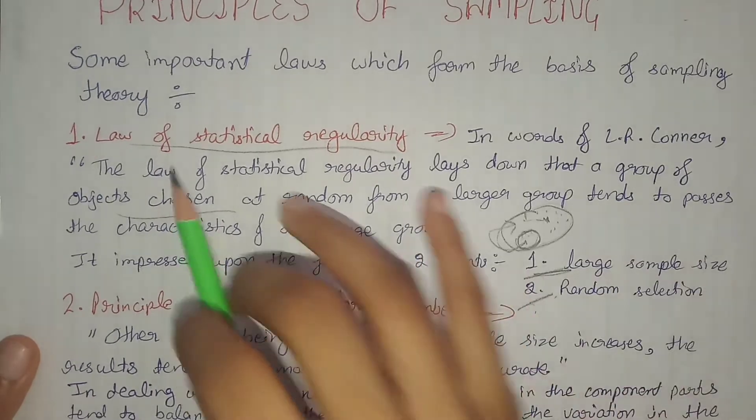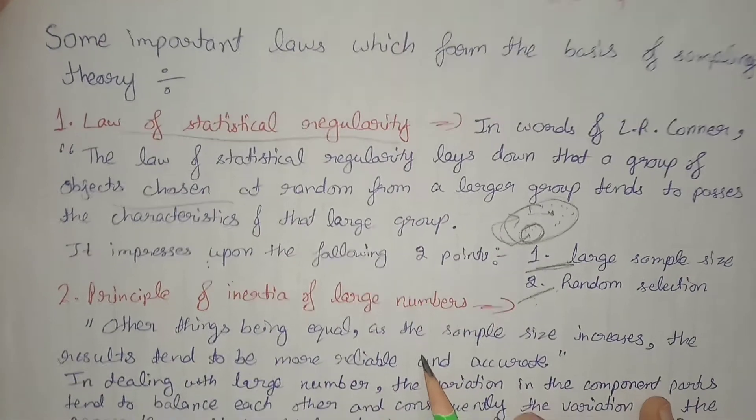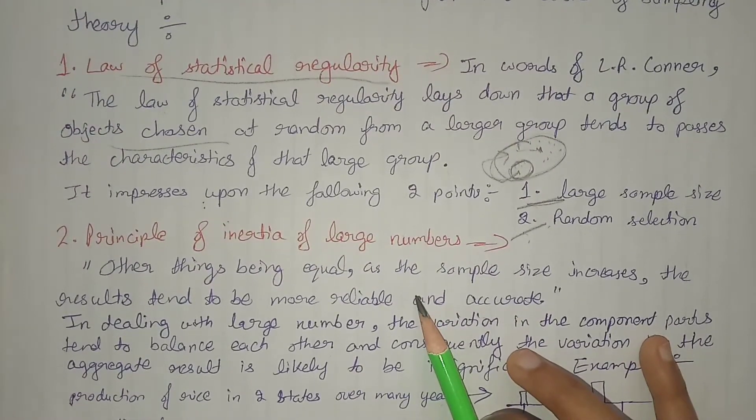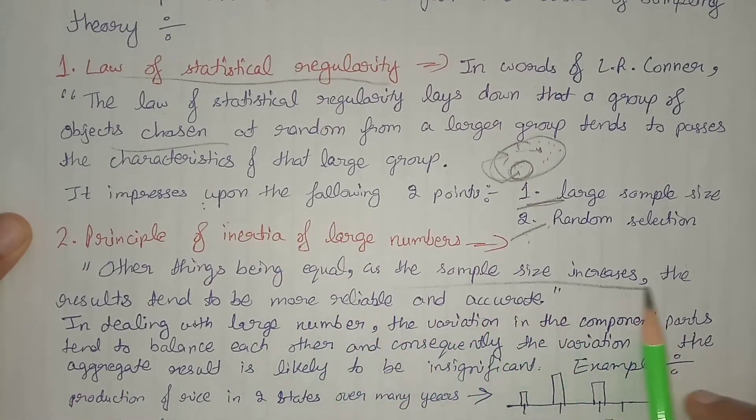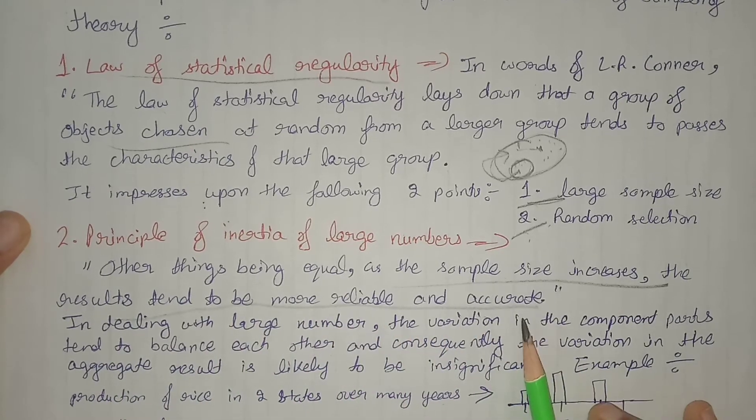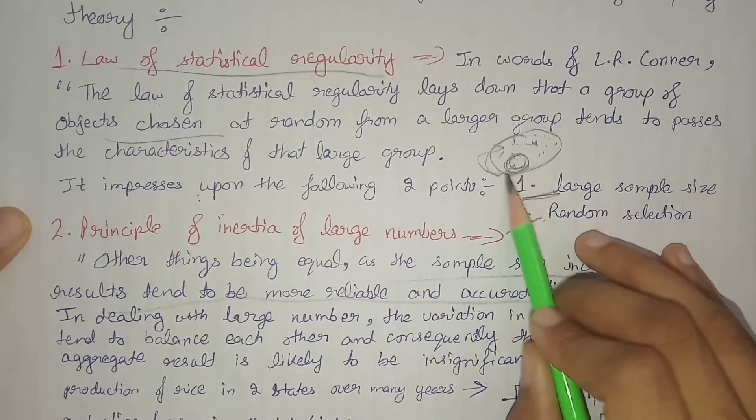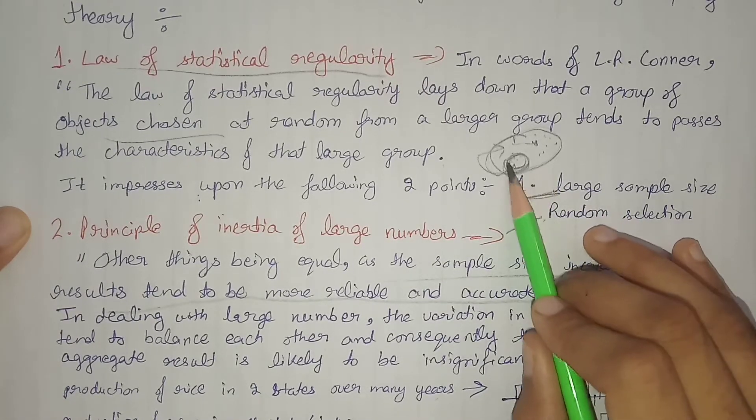So this was the first law. Now, the second law is the principle of inertia of large numbers. Other things being equal, as the sample size increases, the results tend to be more reliable and accurate.